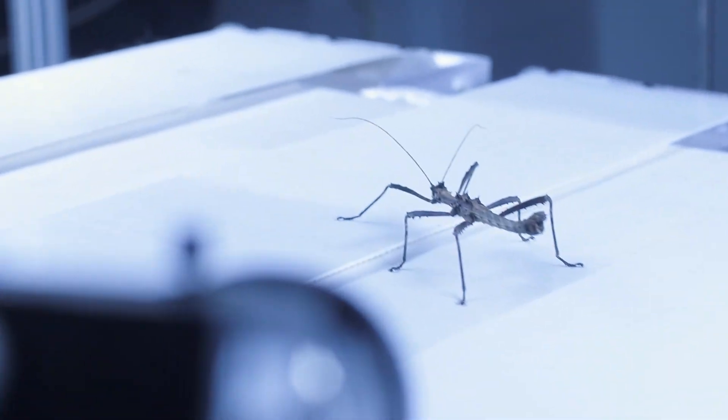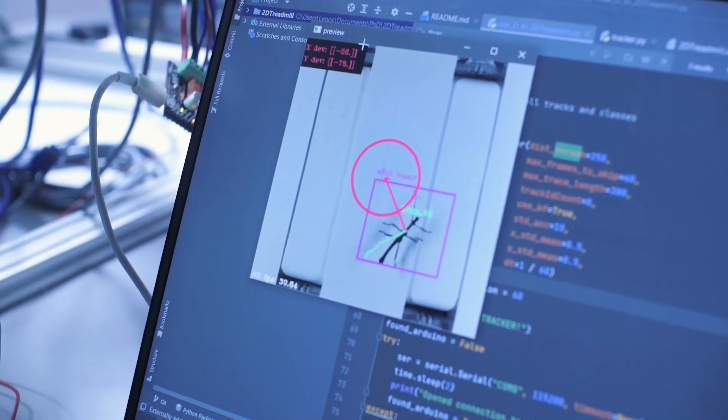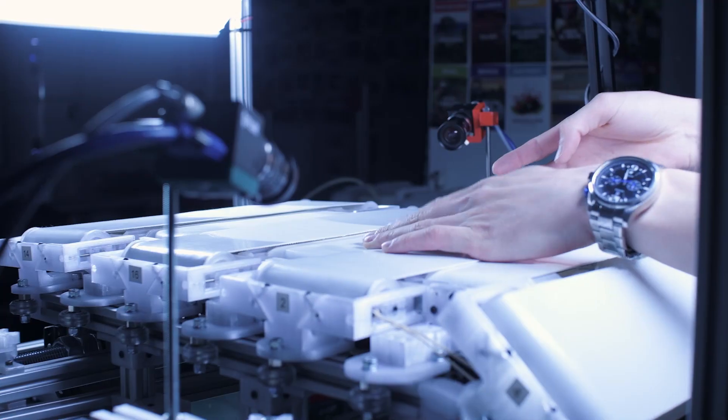To perpetually keep walking insects in the central region of our camera array, we track their position in real time and adjust motor speeds using a closed loop controller.